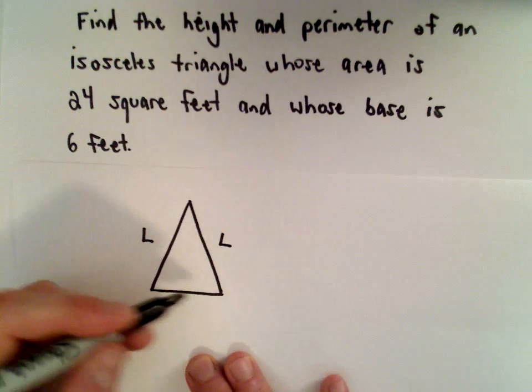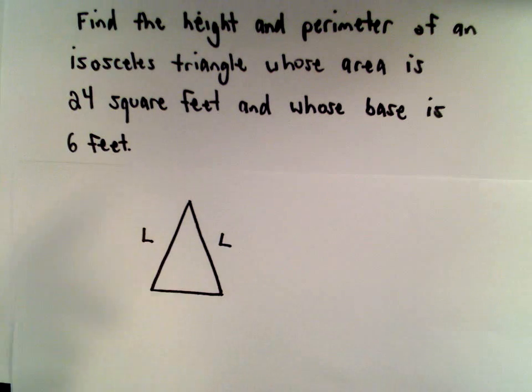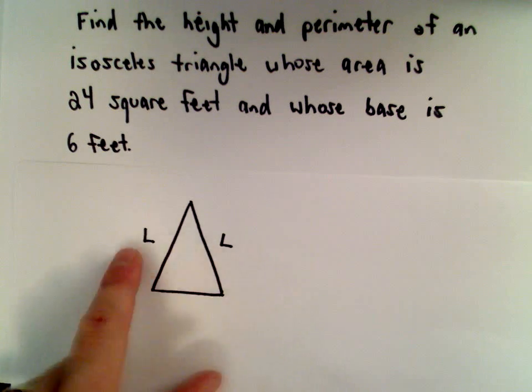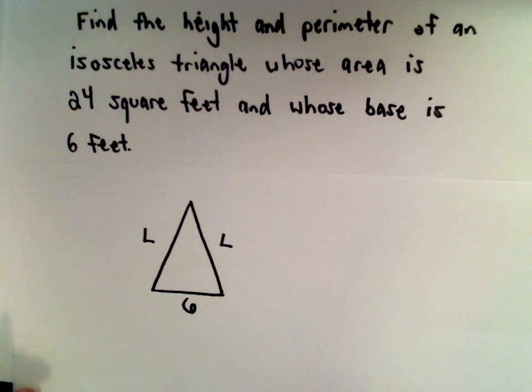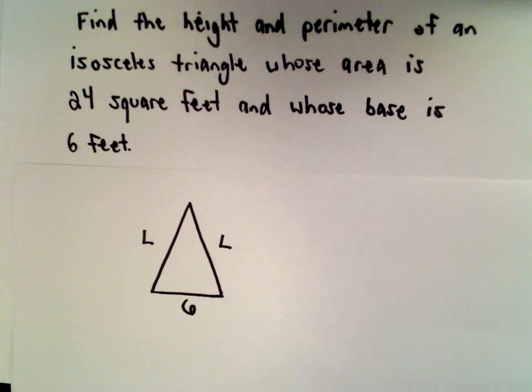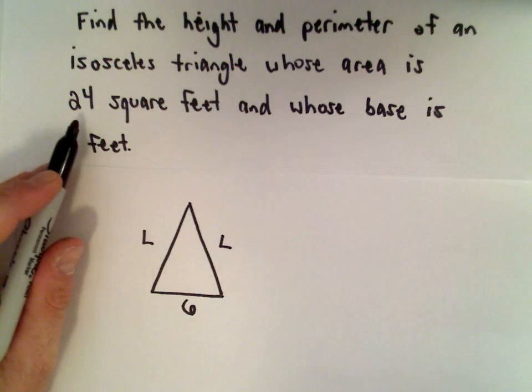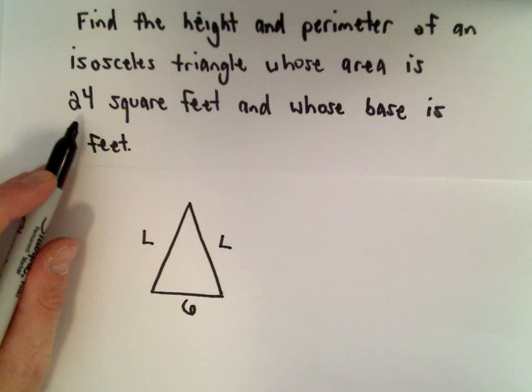And then it also has a base, which is a different value. It's not going to be the same length as L and L. We know that the base is 6 feet. So that's the first thing we need to know, is what an isosceles triangle is. Well, they give us that the area is 24 square feet.